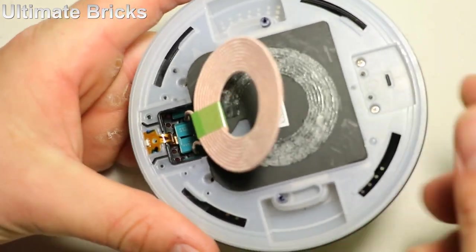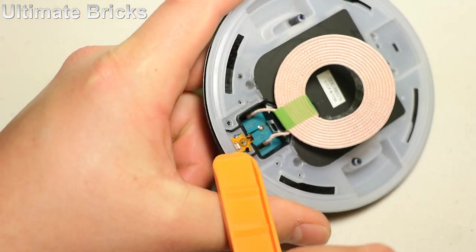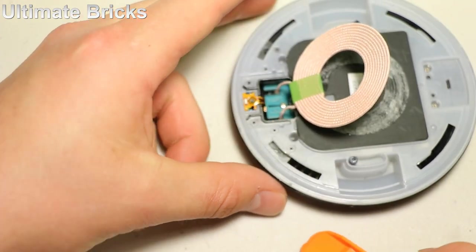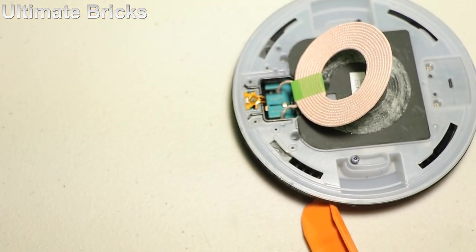And next, there is this LED indicator light that's right there. And so I'm going to try to find a plastic tool to get that one off as well.